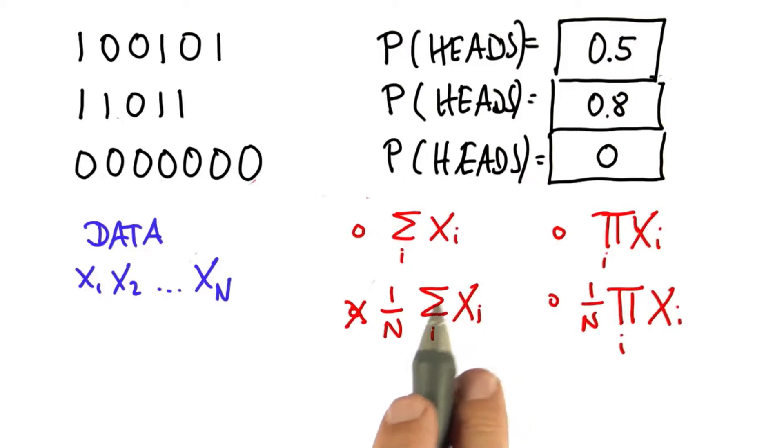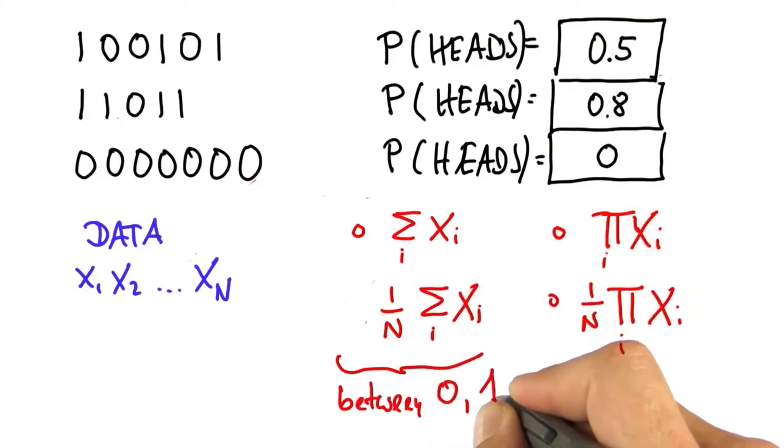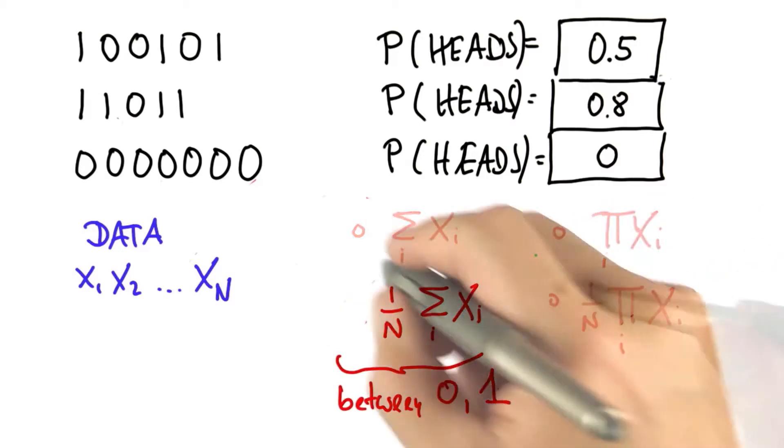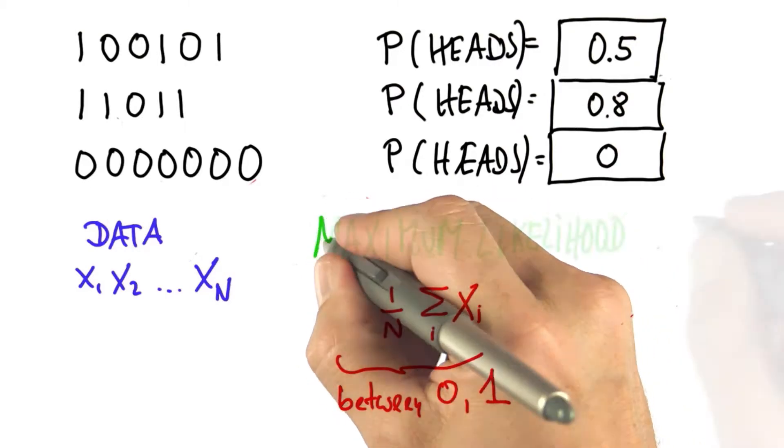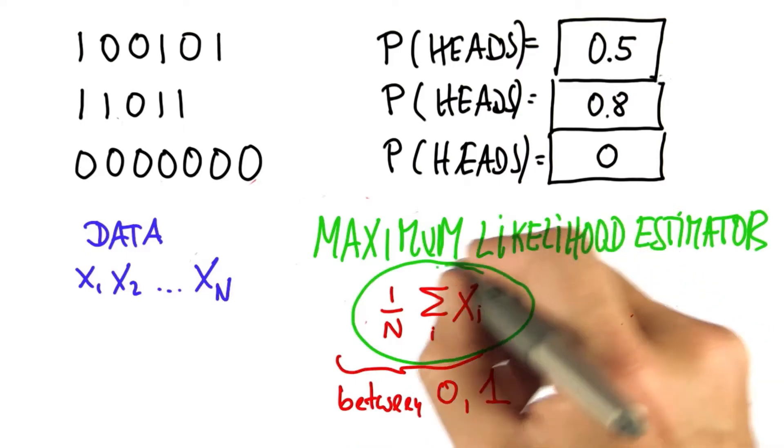Hence, this expression over here will always be between 0 and 1, which is a valid probability. For reasons that should be obvious in a minute, we call this the maximum likelihood estimator. So keep this formula in mind.